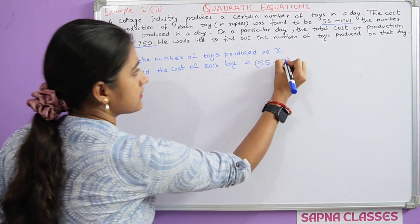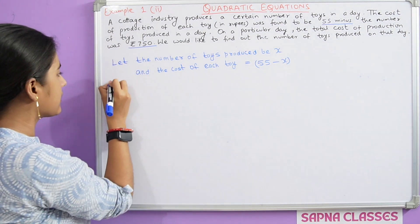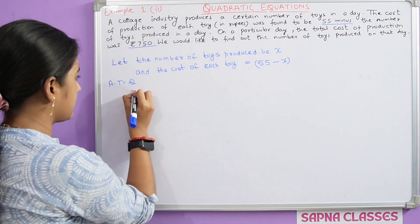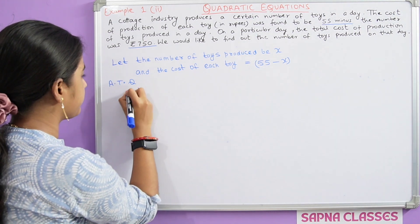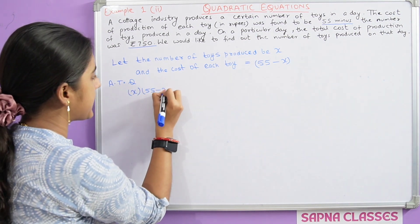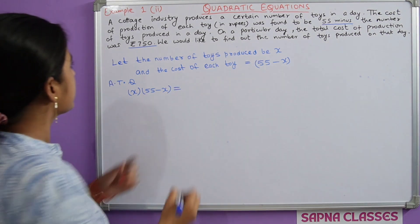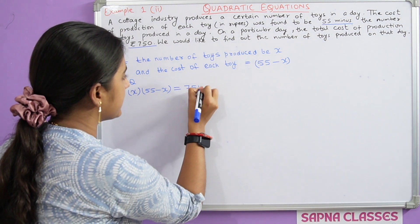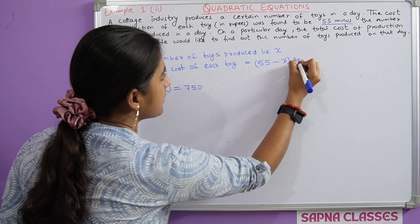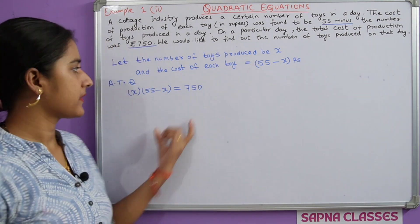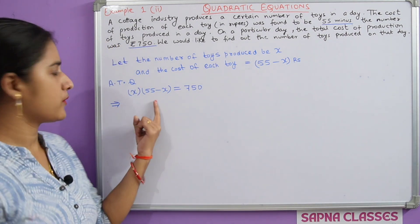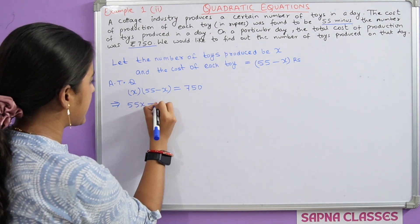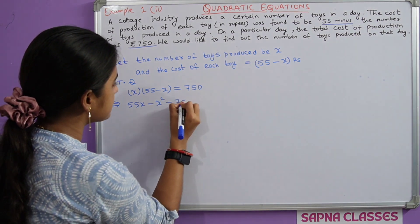Then according to question, x times 55 minus x equal to Rs. 750. Now this multiplies to 55x minus x square minus 750 equal to 0.